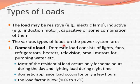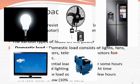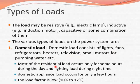The various types of load on the power system — the first one is domestic load. Domestic load consists of lights, fans, refrigerators, heaters, televisions, and small motors for pumping water. Most residential loads occur only for some hours during the day, and lighting load occurs during night time. Domestic appliance load occurs for only a few hours.